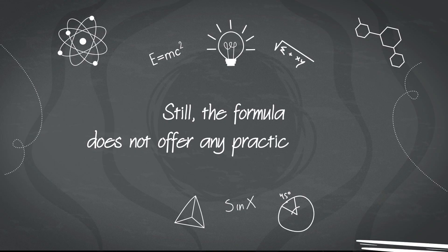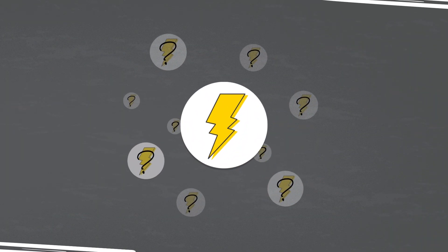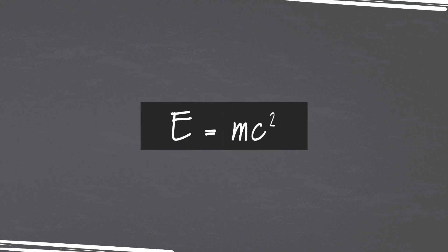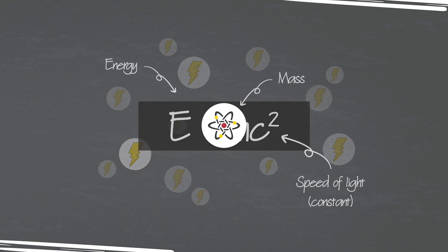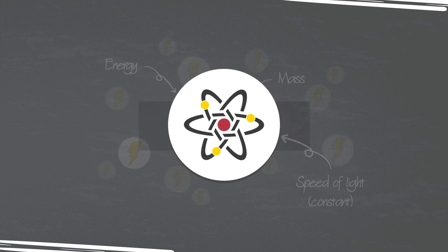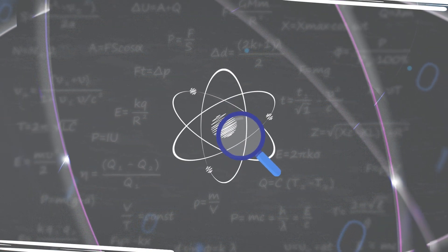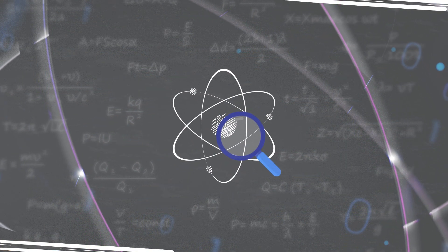Still, the formula does not offer any practical method to determine how much energy resides in a certain mass. One must place absolute trust in the accuracy of the formula's result by multiplying the weight of mass, m, by the speed of light squared. Aside from inherent uncertainty, the formula only mentions mass. It does not demand its user to identify the kind of matter used in the calculation.